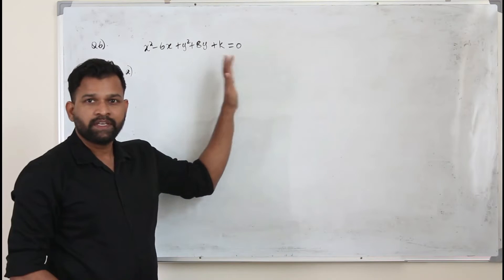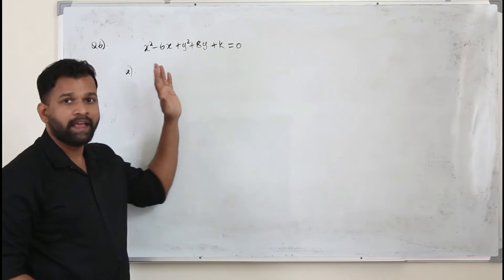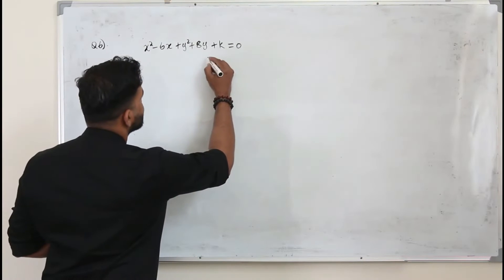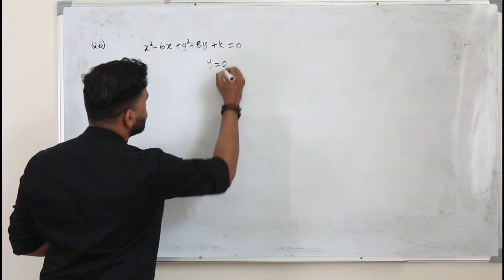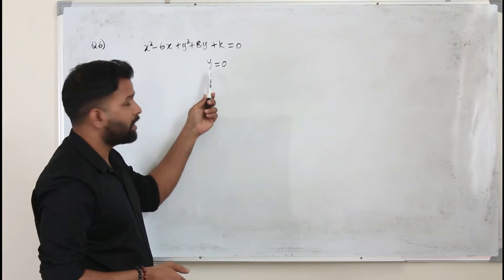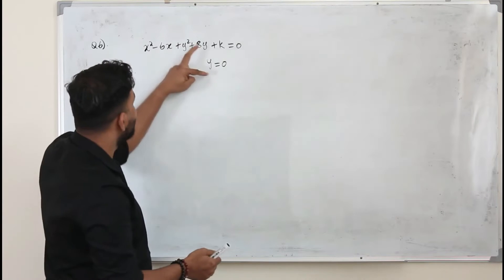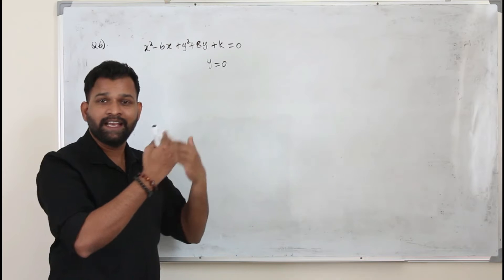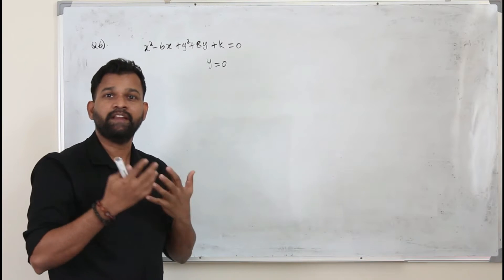We have the equation of a circle here and it's given x-axis is tangent to the circle. The equation of x-axis is y equals 0. So when a curve and a line touches at one point, combine them and frame a quadratic equation and take the b squared minus 4ac discriminant equals 0.